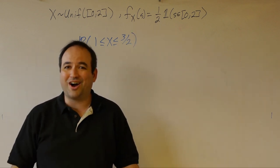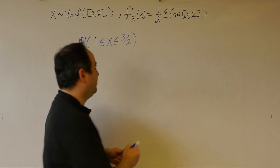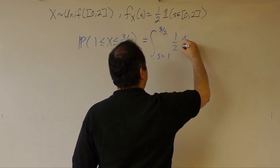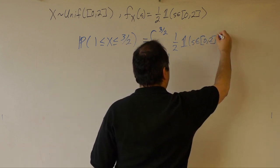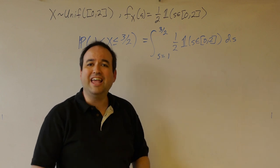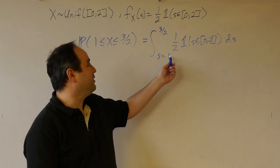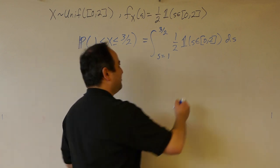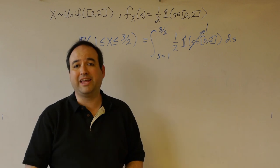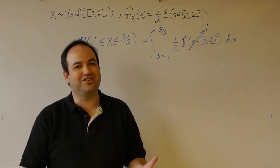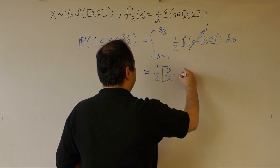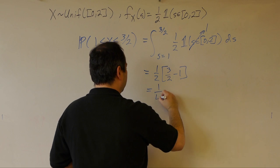Suppose we're interested in knowing what's the probability that this random variable falls between one and three-halves. Using our formula, this is just the integral as s goes from one to three-halves of one-half times the indicator that s is between zero and two. The indicator function is always one for s between one and three-halves, so we can ignore it. The integral of one-half over that interval is one-half times three-halves minus one, or one-fourth.